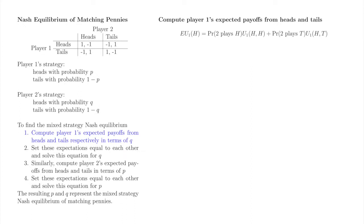When player 1 plays heads, the possible outcomes of the game are heads-heads, which occurs when player 2 plays heads, and heads-tails, which occurs when player 2 plays tails. The probability of heads-heads is equal to the probability of player 2 playing heads, since we have restricted attention to player 1 playing heads. The probability that player 2 plays heads is q, and when that outcome occurs player 1 receives 1. The probability that player 2 plays tails is 1 minus q, and when that outcome occurs player 1 receives minus 1. Player 1's expected payoff when playing heads is 2q minus 1.